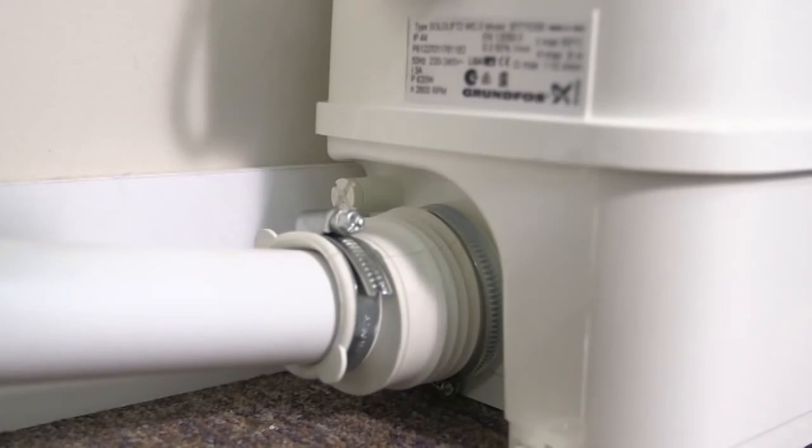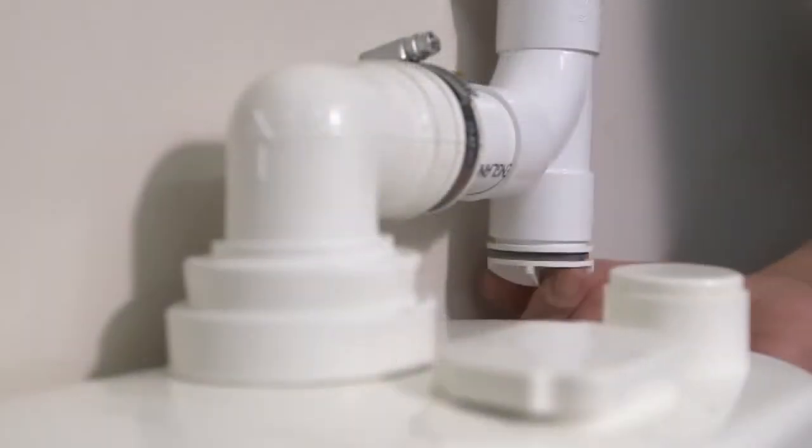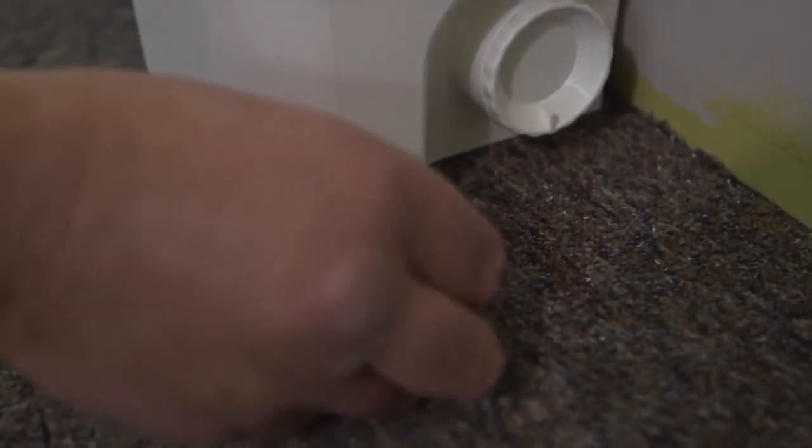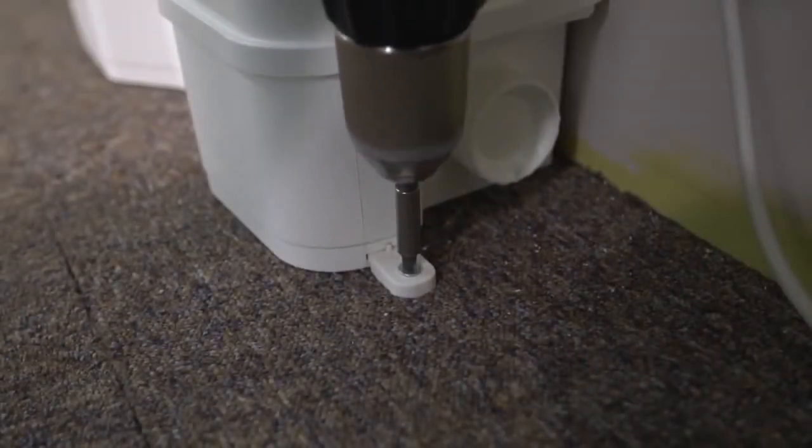Connect the pipes to the unit and remember to fit the drain plug. Secure the unit to the floor with the fixings provided. These simply slide into place on either side of the unit. Then screw them to the floor.